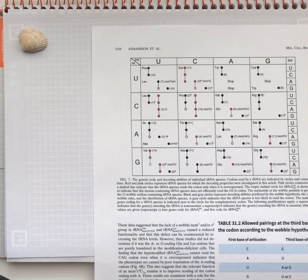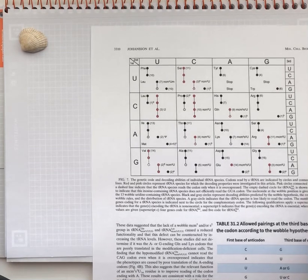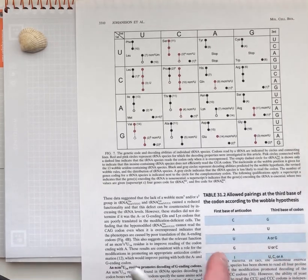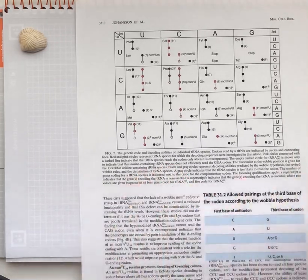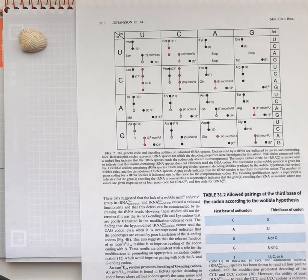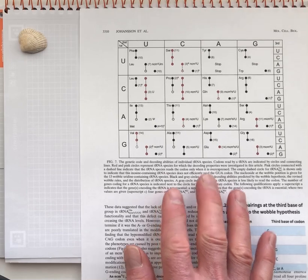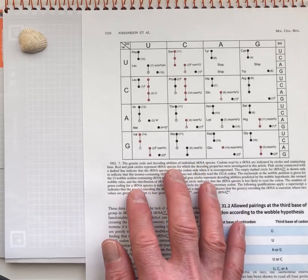So after watching this video, you should feel a little bit more confident using the wobble table and also this genetic code with dots, this form of the genetic code that we're using on exam 4 and the final exam.